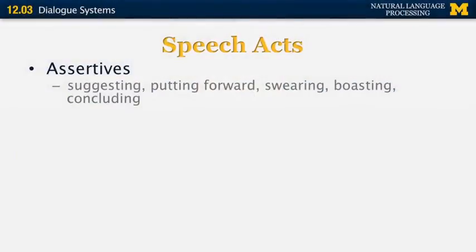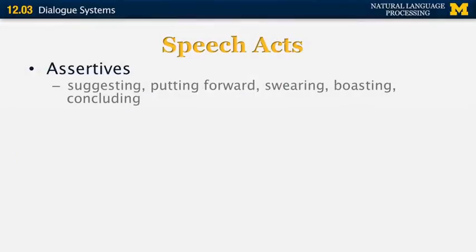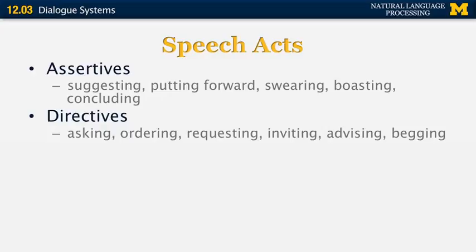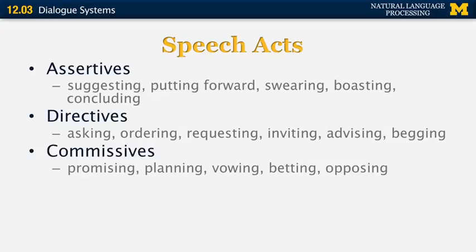The final thing I want to mention about discourse and dialogue analysis is speech acts. Speech acts are specific expressions that are not just factual statements. Assertives include things like suggesting, putting forward, swearing, boasting, and concluding. Directives include asking, ordering, requesting, inviting, advising, and begging. Commissives include promising, planning, vowing, betting, and opposing.